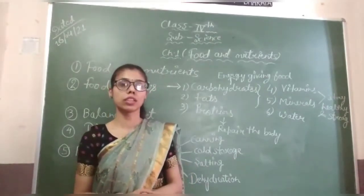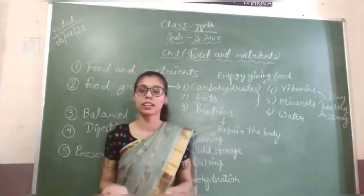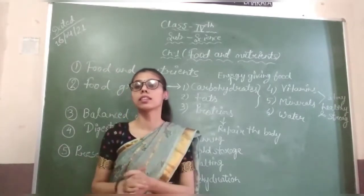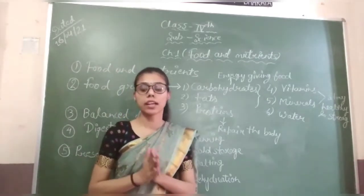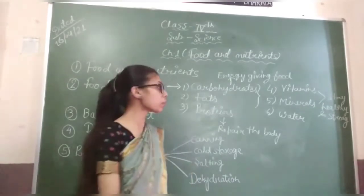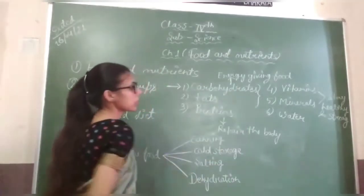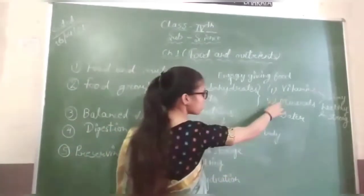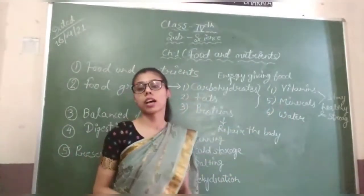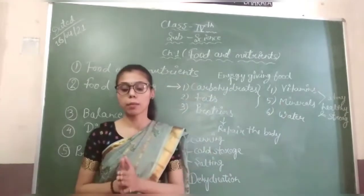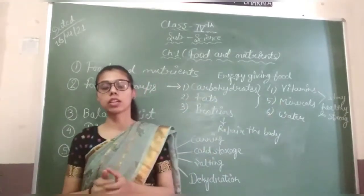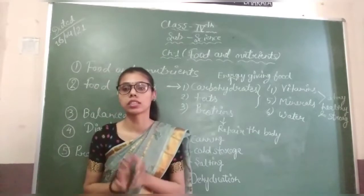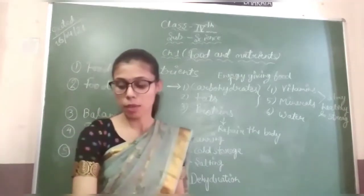Next is balanced diet. Balanced diet means we take diet in proper quantities. Balanced diet contains carbohydrates, fat, proteins, vitamins, and minerals — all these are included in a balanced diet. It is important that all these nutrients are present in the right amounts.